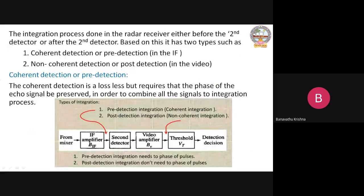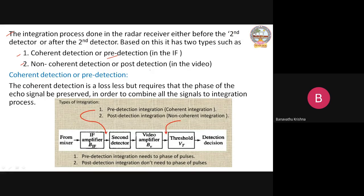The integration process is done in the radar receiver either before the second detector or after the second detector. Based on this, it has two types: one is coherent detection or pre-detection, and the second one is non-coherent detection or post-detection.